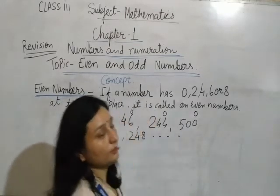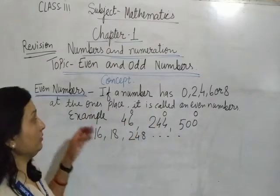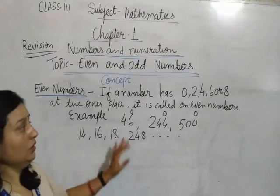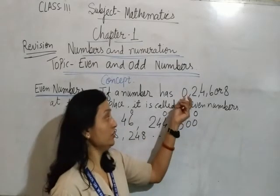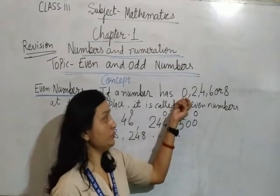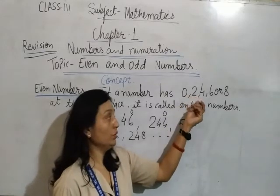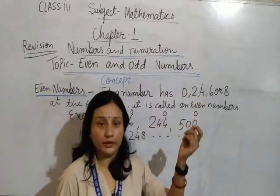Any numbers are given, you check which is the even number. An even number has ones place value 0, 2, 4, 6, or 8.